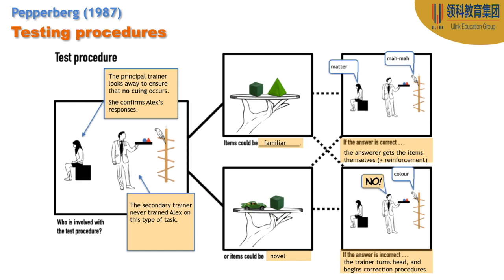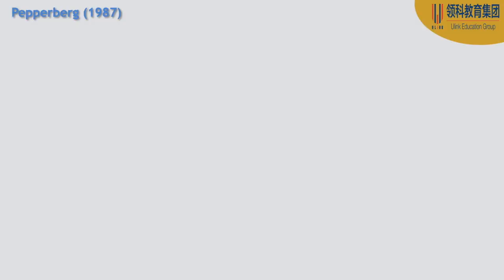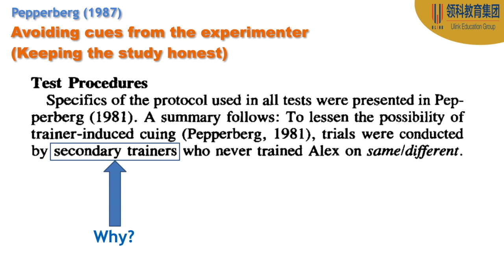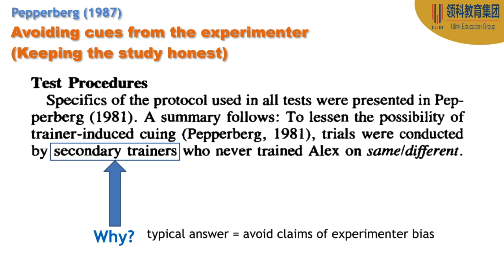If Alex answers correctly, he gets to keep the items — he is incentivized to get it correct. If he's incorrect, the trainer says 'no,' turns his head, and begins a correction procedure to give Alex another chance to learn from his mistakes. The principal trainer is facing away to avoid cueing — you don't want any non-verbal expressions or body language to indicate when Alex is right or wrong. Sometimes this happens by accident, and you want to avoid both experimenter bias and accidental cues.